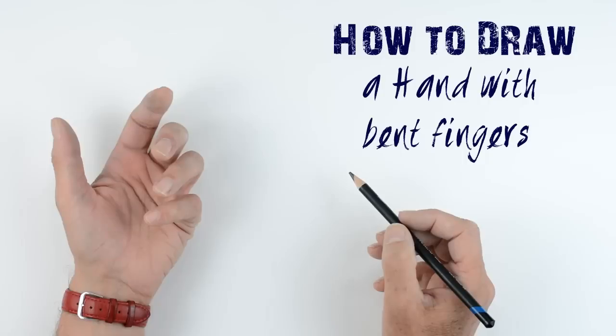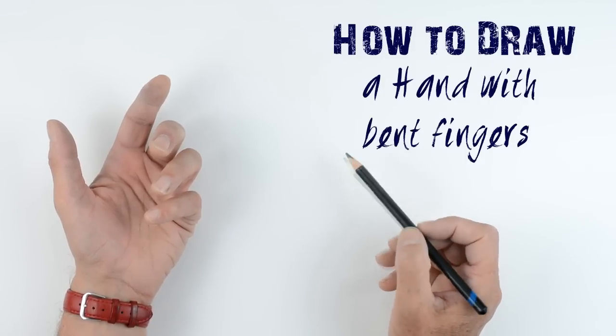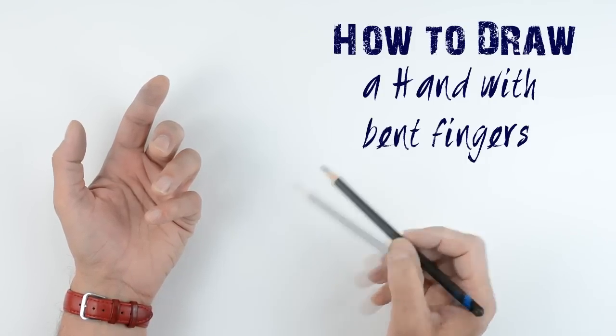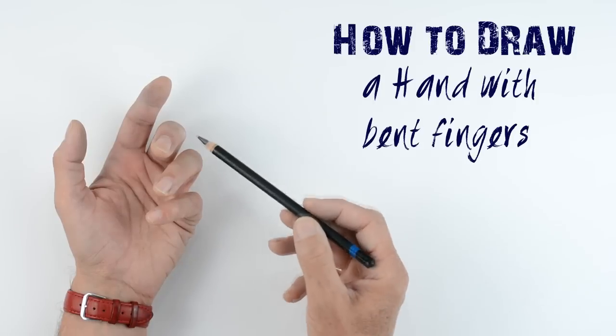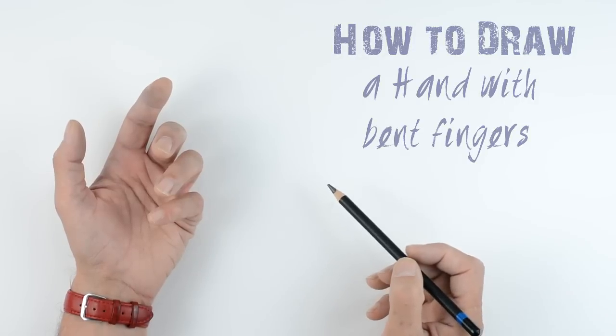To draw a hand with the fingers bent like this looks quite difficult, but if we keep it simple and look at these things as simple shapes, simple cylinders, then it becomes much easier to draw.